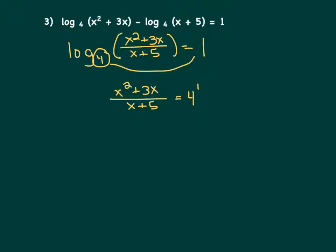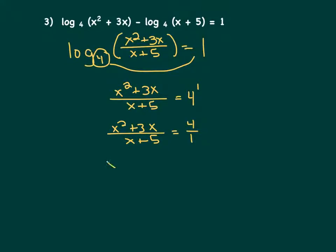Now 4 to the first is just equal to 4. So we rewrite this as (x squared plus 3x) over (x plus 5) equals 4 over 1. The reason we put it over 1 is because we have a fraction on the left-hand side, so we can cross-multiply and solve. Multiplying top left by bottom right: x squared plus 3x times 1 is just x squared plus 3x. Then multiplying top right by bottom left: 4 times x is 4x, and 4 times 5 is positive 20.